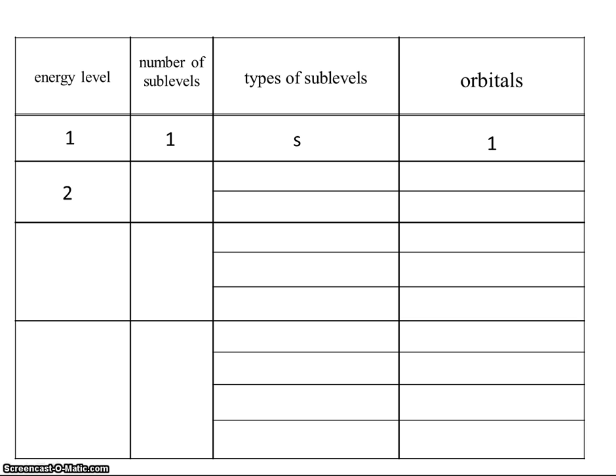Energy level 2 has two sublevels, s and p. Once again, s has one orbital, and p has three orbitals.